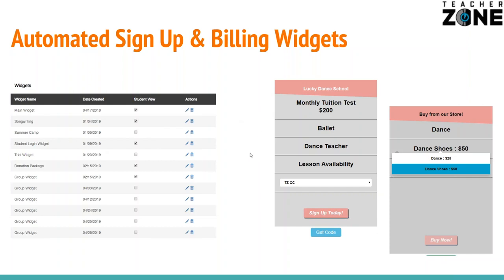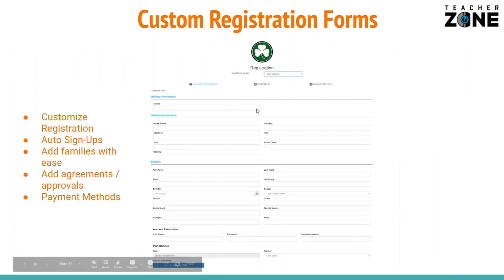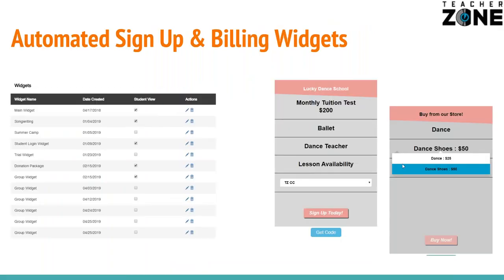We also provide you with automatic sign-up widgets — this is really important. Once you build a plan, you can put these on your website so that students at any time of day or night can simply log onto your site, click and see the plans that you offer, select a genre, a teacher — it'll show that teacher's availability, whether it's a group or private lesson. They can hit sign up and pay. You can have a custom registration form where as soon as they sign up, they're required to fill out all of your information, agree to your contracts, and fill out payment methods. It'll automatically create a portal in TeacherZone, put them on the calendar — you wake up tomorrow, you've got a new sign-up. We also have a store widget, which is really nice — if you offer any type of material that you sell, you can actually charge the clients for that as well.